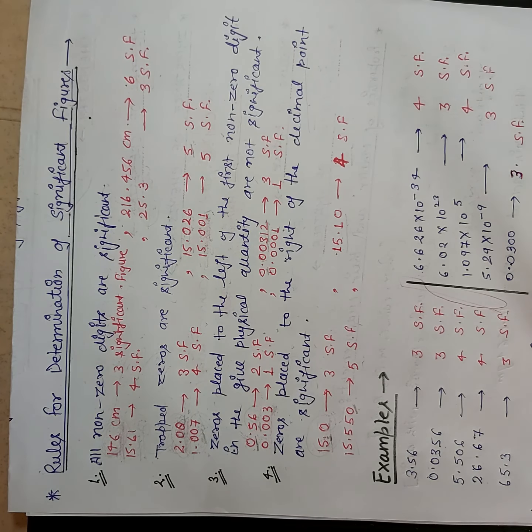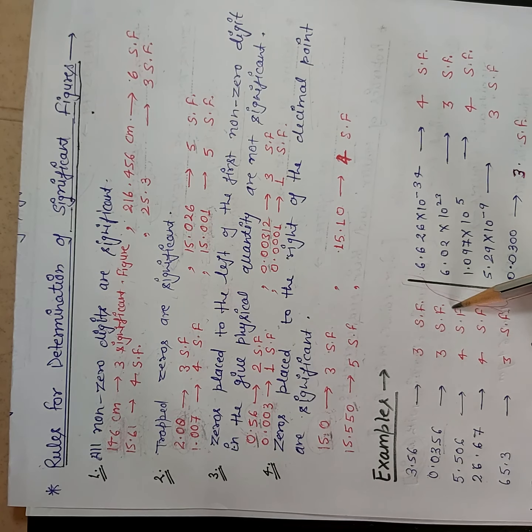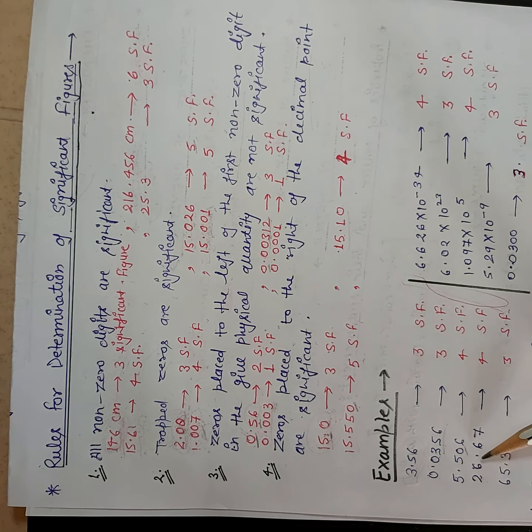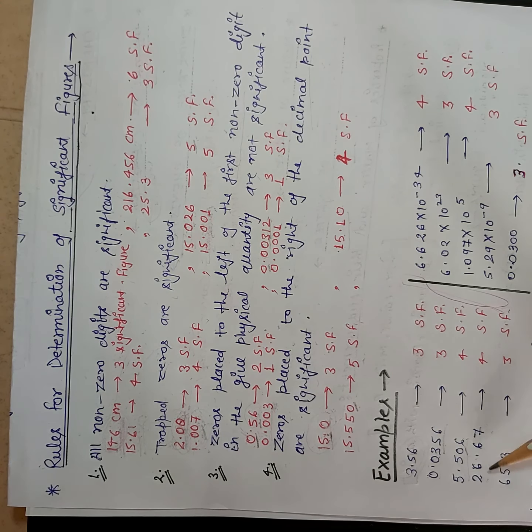Let's take some more examples. 3.56 — all the given digits are non-zero digits, so there are three significant figures. In this, both the zeros are present to the left of the first non-zero digit, that's why both will not be considered as significant figures, so there are only three significant figures. In 5.506, this is a trapped zero and also placed to the right of the decimal point, so here four significant figures. All non-zero digits — four significant figures. And all non-zero digits — three significant figures.